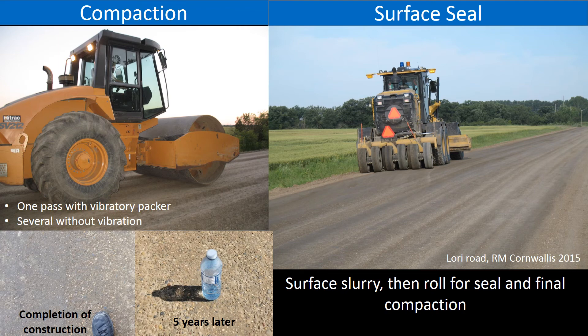The entire construction process for one mile of road takes one day. At the end of construction, the road is immediately open to traffic. The road goes through a curing process that may take up to about 30 days. During curing, residual moisture is removed and the resultant pore space is sealed and compacted by the ongoing traffic. The road reaches its maximum strength and densification after the curing period.